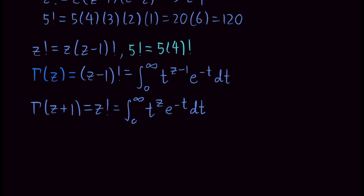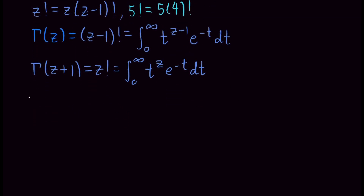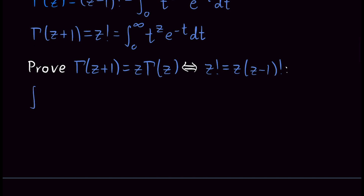What we want to do in this video is show that the recursive property is satisfied with this gamma function. That means we want to prove that gamma of z plus 1 is equal to z times gamma of z. Notice this is equivalent to saying z factorial equals z times z minus 1 factorial — just an equivalent statement. Let's prove this. Starting with the integral definition: gamma of z plus 1 is the integral from 0 to infinity of t to the z times e to the minus t, dt. We want to perform an integration by parts.